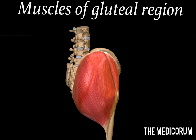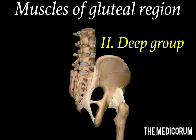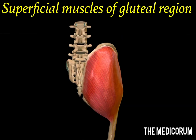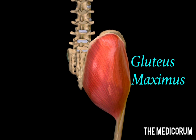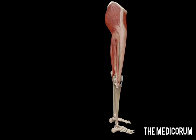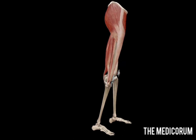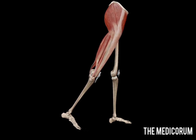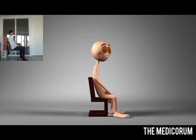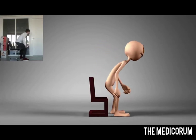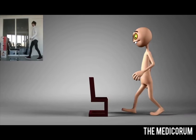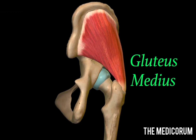The muscles of the gluteal region are divided into two groups: superficial group and deep group. The superficial group consists of three muscles. The first muscle is the gluteus maximus — a very large quadrilateral shaped muscle covering most of the posterior side of the gluteal region. The main action of gluteus maximus is extension of the thigh at the hip joint. It is very important for rising up from a sitting position and also maintains the erect posture.